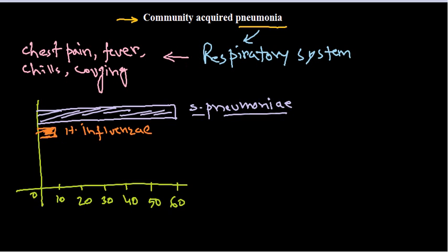The third important organism that can cause this disease is Staphylococcus aureus, which is responsible for five to six percent of cases.